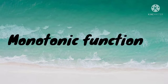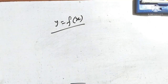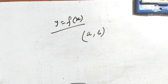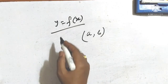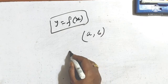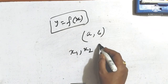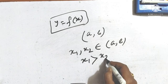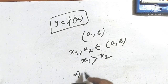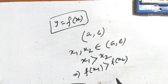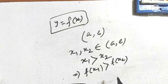I am going to show you a function y equals to fx. At our closed interval a, b, if x1 is greater than x2 and fx1 is greater than fx2, then the function is called monotonically increasing.